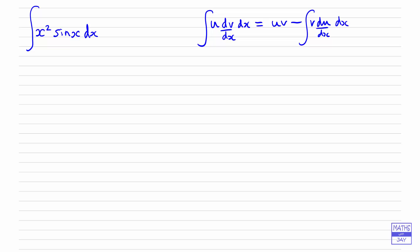So what we're doing here is starting off with one integral and ending up with an integral that's simpler. Now sometimes you can do this in one stage, but in this example we're going to have to have two stages. So instead of u and v, I'm going to have u1 and v1 for the first stage and u2 and v2 for the second stage.